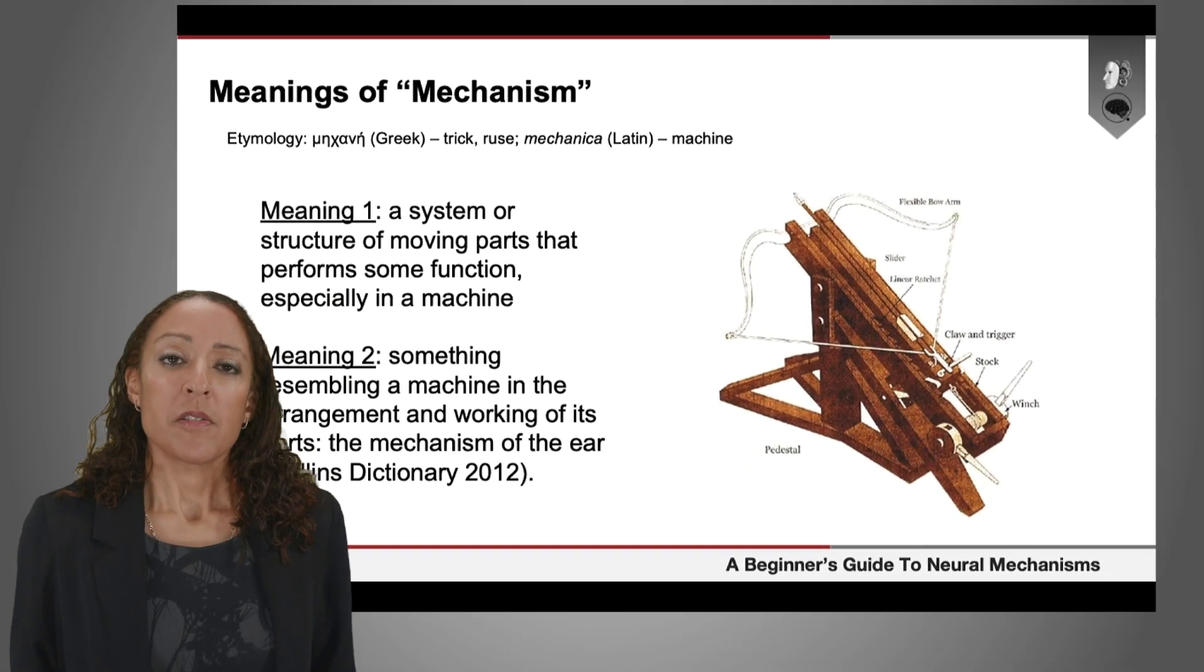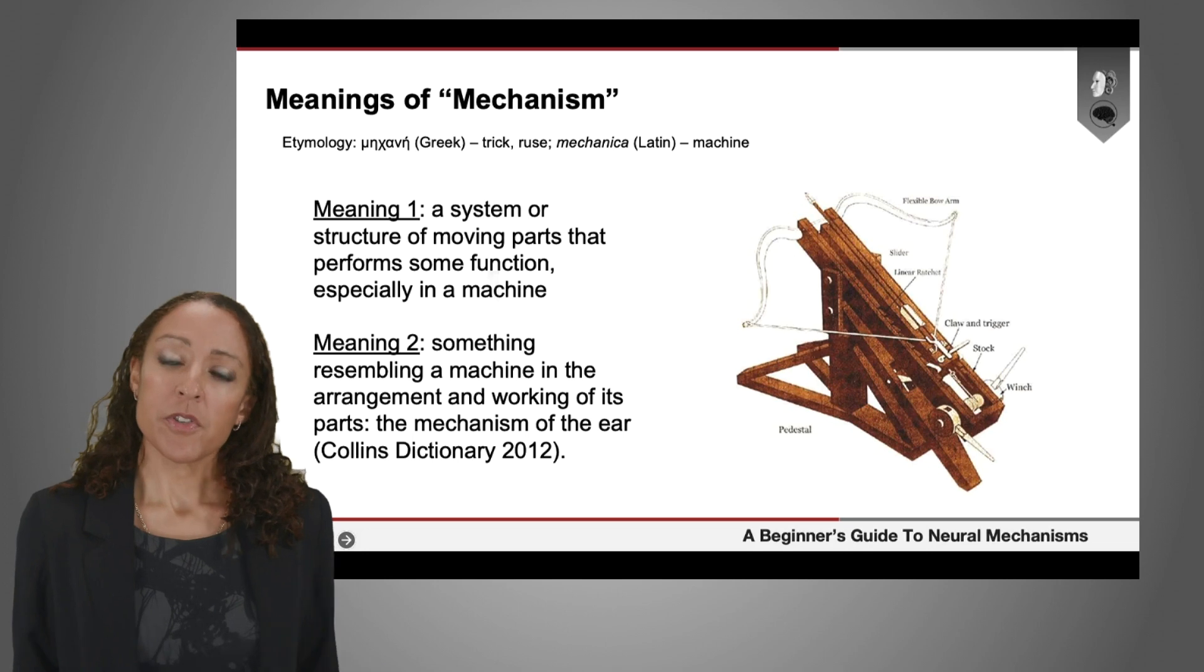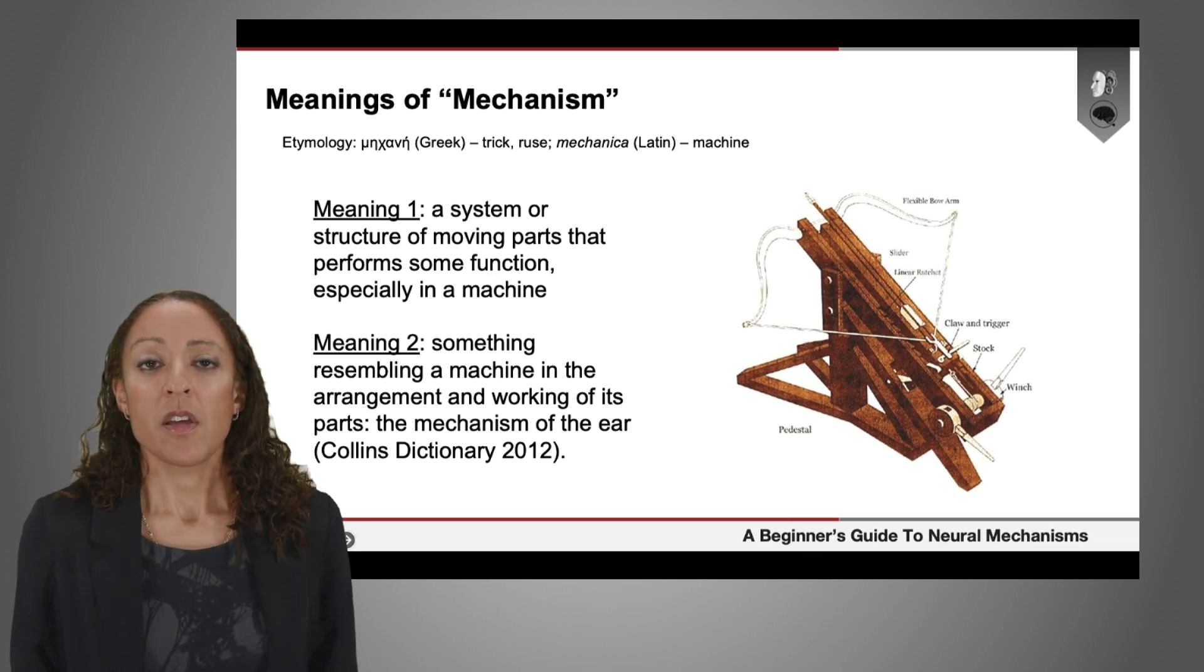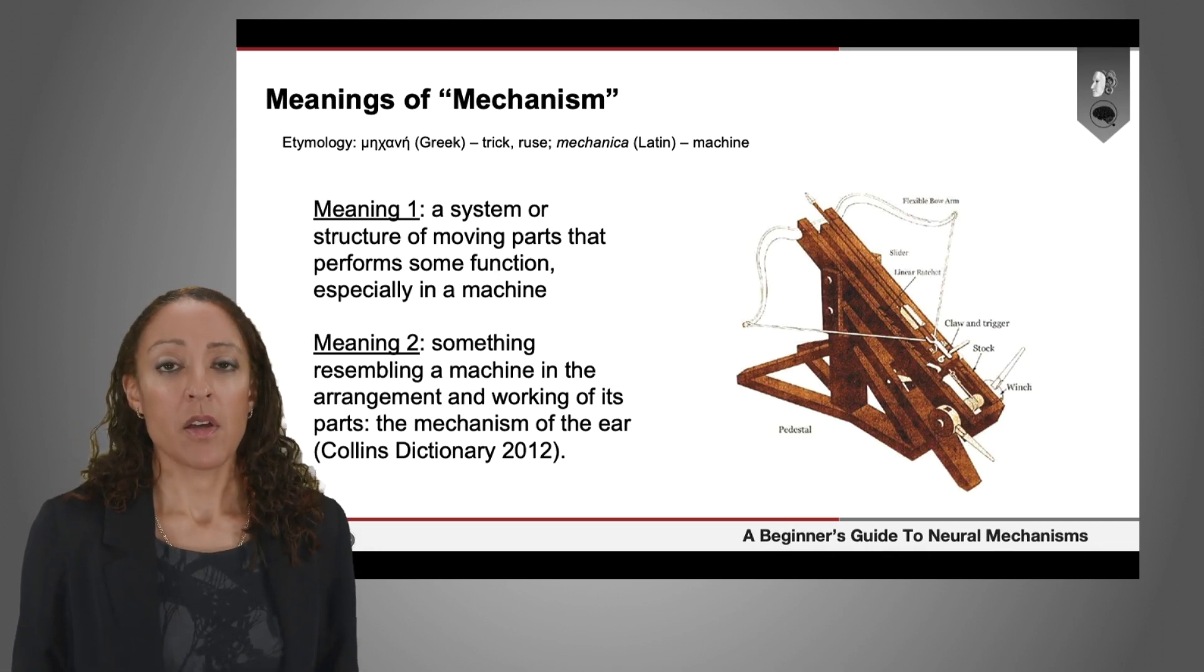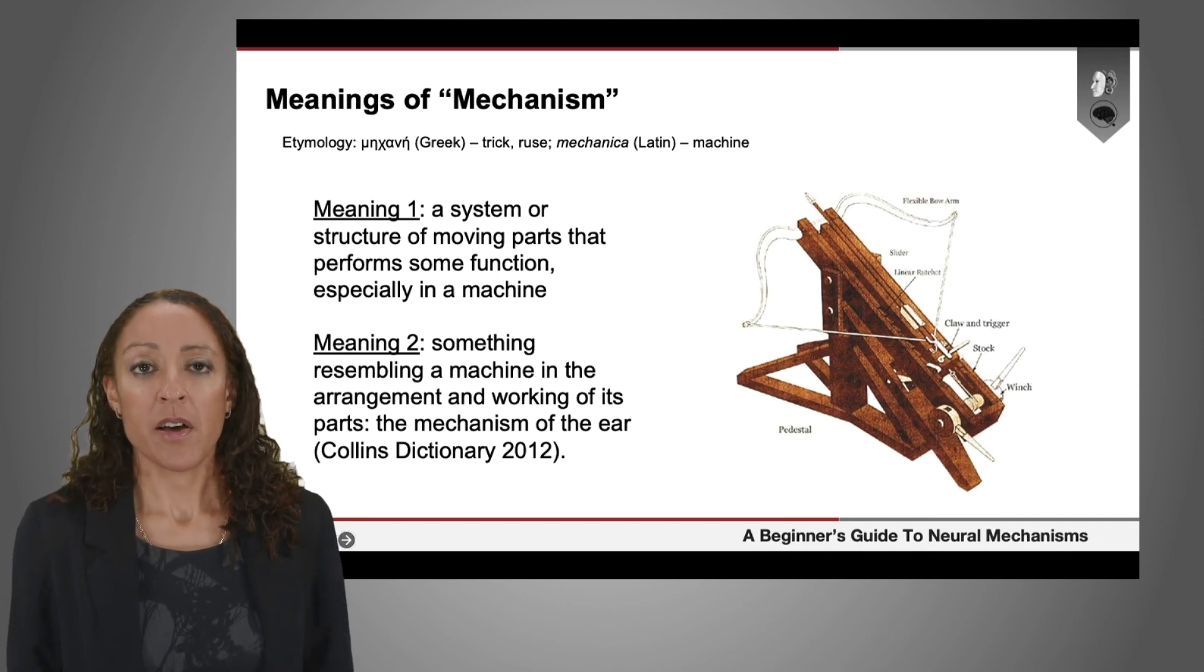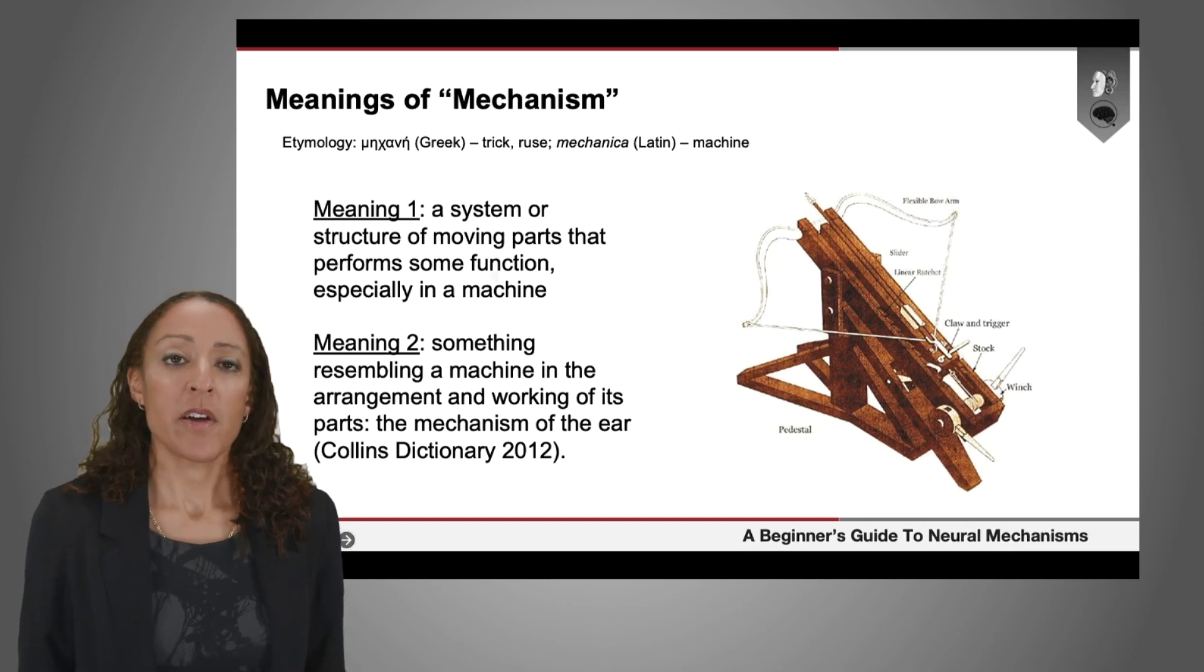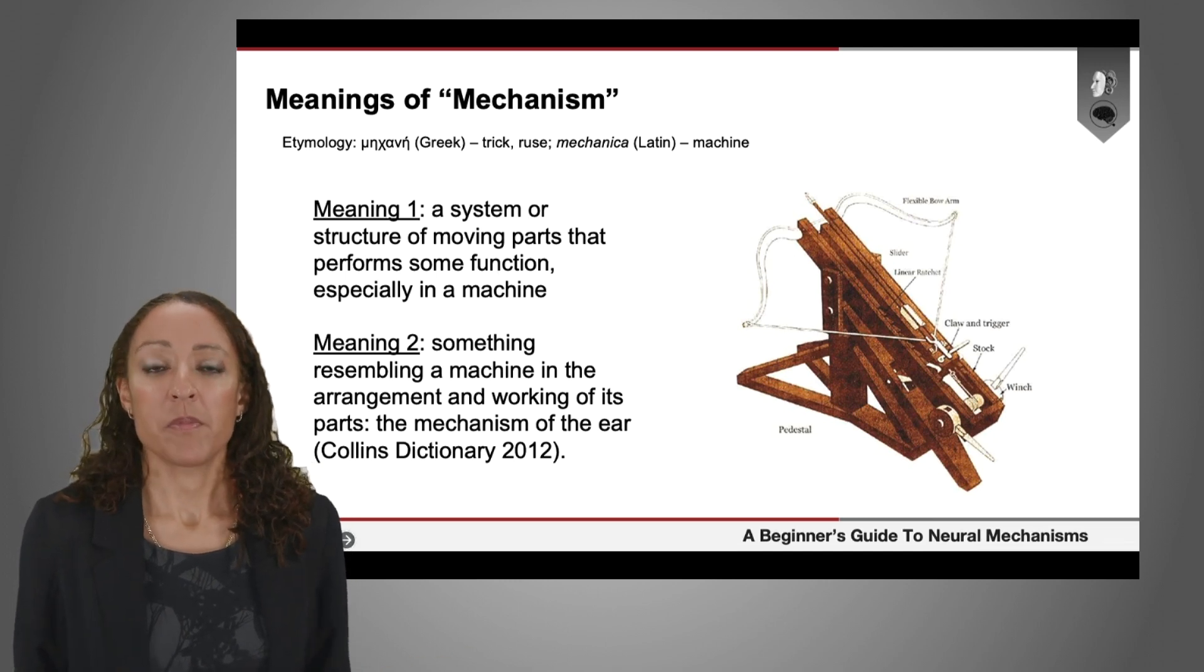But it's also worth thinking here about some of the deeper meanings in the background of this word mechanism. Philosophers of neuroscience today who write about mechanisms like to point out or insist that the whole idea of a mechanism is not really tied to machines and devices that people make. But at least etymologically, what a mechanism is, is a machine. You can see this in these dictionary definitions of mechanisms that the primary meaning is a system of moving parts which one might find in a machine, or also analogously one might find in an animal like the mechanism of the ear, the example given here.